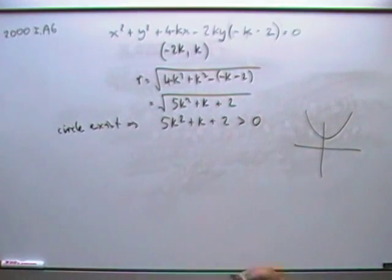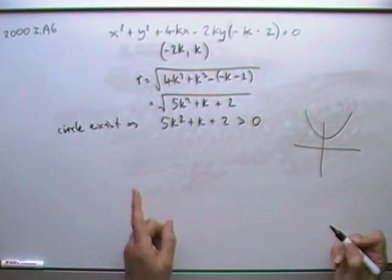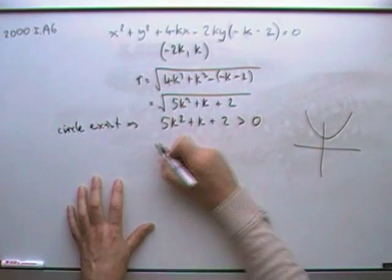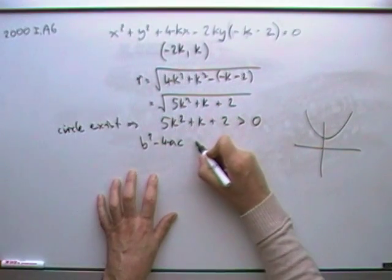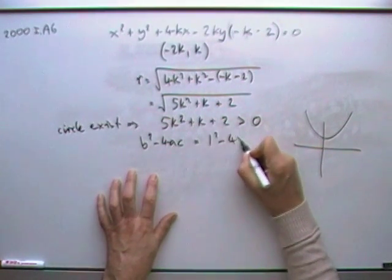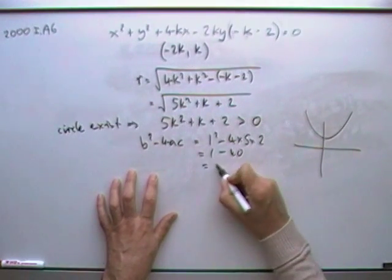So which way to show that? Well, you can show that by the discriminant. So I'll work out for that, work out the discriminant. b squared minus 4ac would be 1 squared minus 4 times 5 times 2, that's 1 minus 40, so that's negative 39.